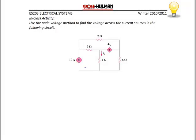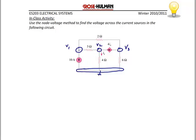Let's try one more example. First, label the ground at the bottom. Then name the nodes from left to right. The meeting point of the 10 amp, the 3 ohm, and the 2 ohm — we'll call it V1. The meeting point of the 3 ohm, the 4IX, and the 4 ohm is V2. And the meeting point on the right node is V3. Notice that this circuit has a current-controlled current source. Whenever you have a dependent source, you're going to need a constraint equation, giving us four unknowns instead of three.